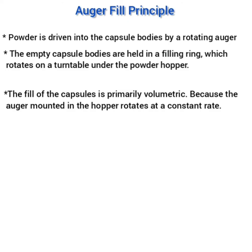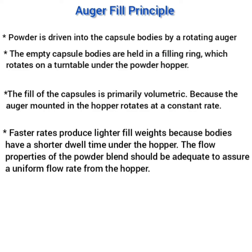A faster rotation rate produces lighter fill weight capsules because the bodies have a shorter dwell time under the hopper — meaning less material is transferred into the capsules. This is why a faster filling rate produces lighter weight capsules. The flow properties of the powder blend should be adequate to assure a uniform flow rate from the hopper, so that powder flows easily from the hopper into the capsule bodies.